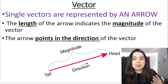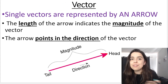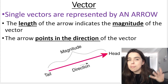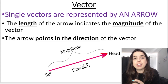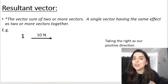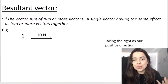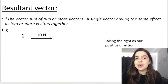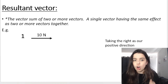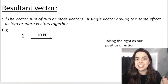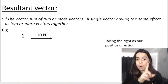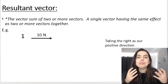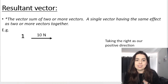Single vectors are represented by an arrow. The length of the arrow represents the size or the magnitude of the vector. The arrow points in the direction that the vector is pointing in. A resultant vector is the vector sum of two or more vectors added together, or it's a single vector that has the same effect as two or more vectors together.